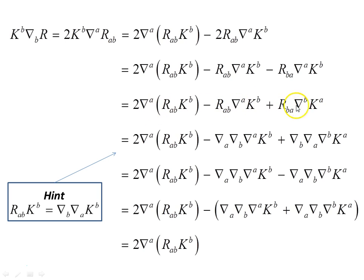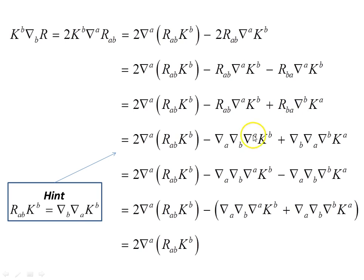Next, on the last term, we swap the indices on the Killing vector. That operation is anti-symmetric, so swapping a and b to b and a changes the minus sign to a plus. Then we replace the Ricci tensor R_ab in both forms — R_ab and R_ba, which are equal — with the result we found earlier: the Ricci tensor times the Killing vector expressed as two covariant derivatives times the Killing vector. The Ricci tensor part is replaced by those two covariant derivative parts.